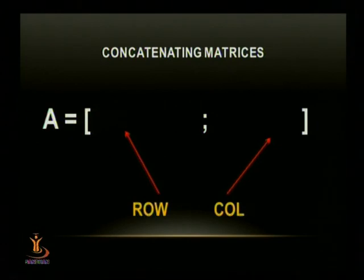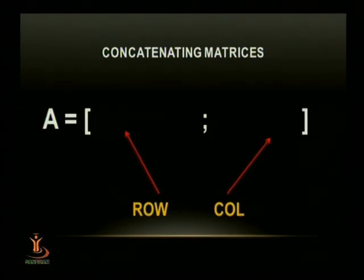There are some more details to it. See, again, when you concatenate matrix, that means you are creating a new matrix, which is a joint by some two other matrices. Suppose A is my matrix. So, it has to be row, semicolon, columns. The basic convention.